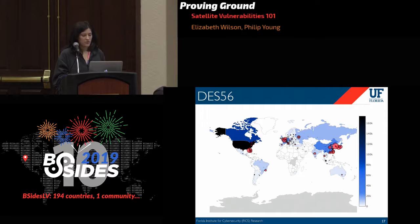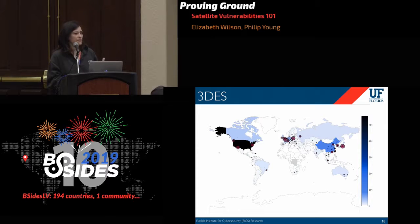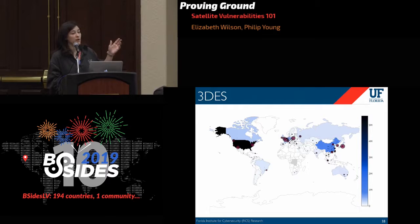For Triple DES, many countries support it at 40% of servers, but the US absolutely dwarfs every other country in raw numbers, with China coming in next.